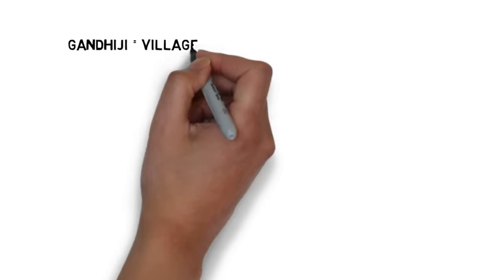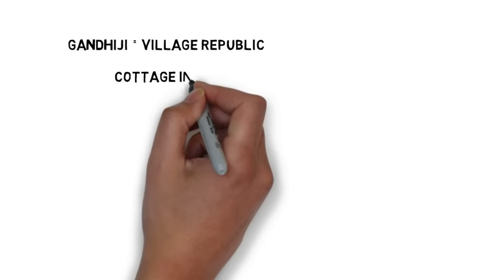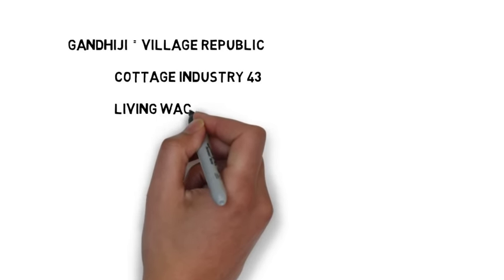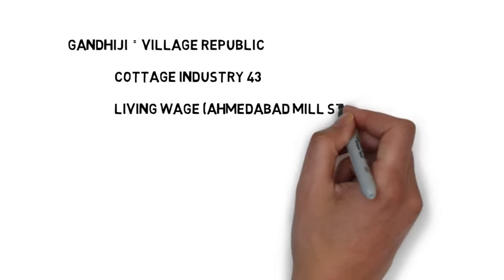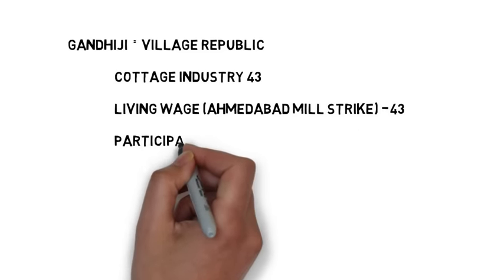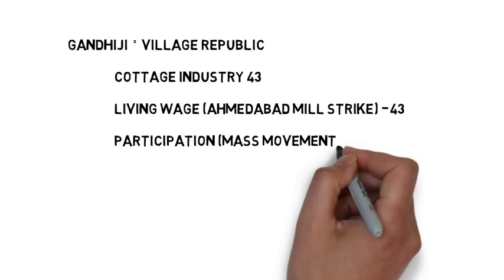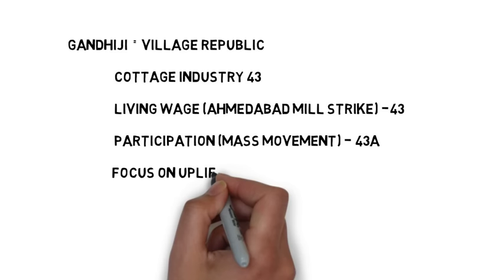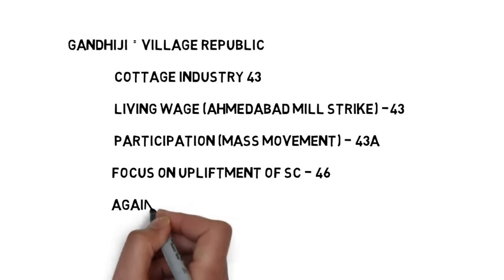When we talk about Gandhiji, the first thing that comes to mind is that he stood for village republics, which means Panchayati Raj. Second, he did not like big industries and always favored cottage industries. Third, living wage — remember that in the Ahmedabad mill strike, Gandhiji stood for mill workers and fought for increasing their wages.